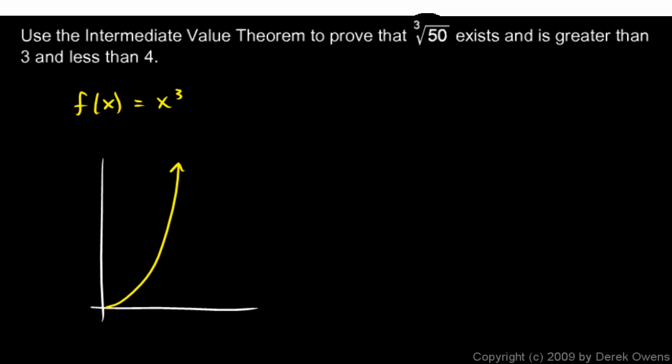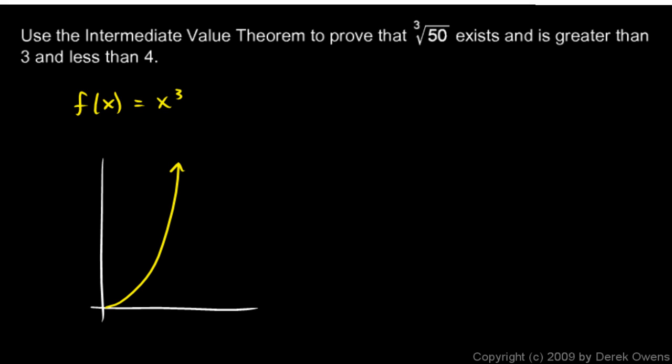And we're trying to find the cube root of 50, and we know it's going to be between 3 and 4, or we're going to show that it's between 3 and 4. So on the graph, if I find an x value of 3 and an x value of 4,